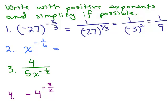Next: x to the negative 1 sixth. That's simply 1 over x to the positive 1 sixth, and we can also write that as 1 over the sixth root of x if we want to write it with radicals. Both forms are correct — we've at least written it without the negative exponent.